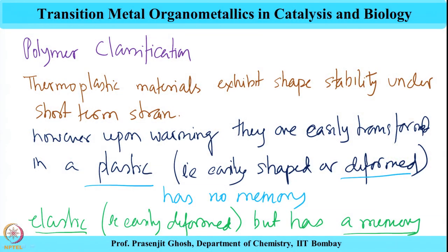Whereas the plastic material can also be deformed easily, however when the deforming force is taken off it retains the deformed shape — it has no memory and does not go back to its original state. So at a higher temperature, these thermoplastics are plastic, and this change is reversible.